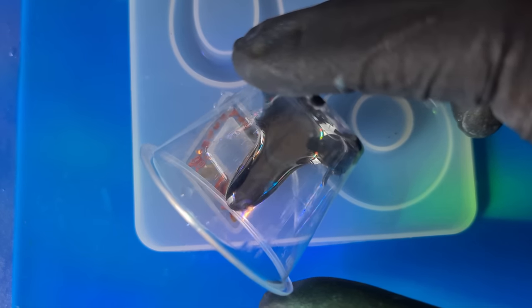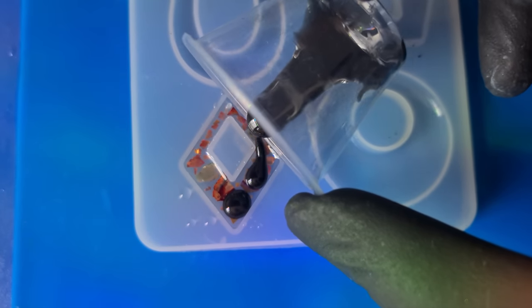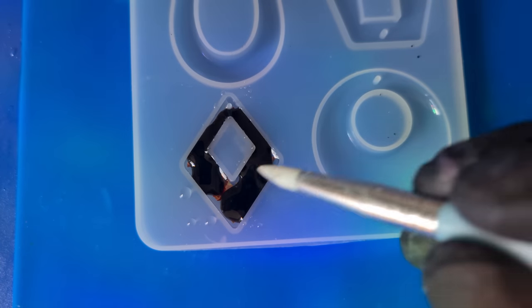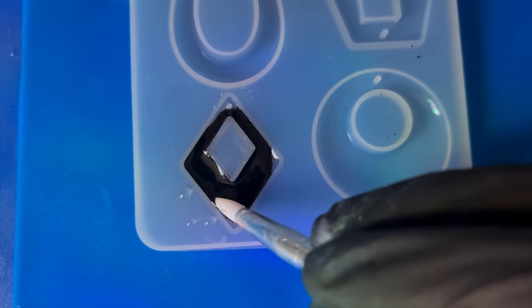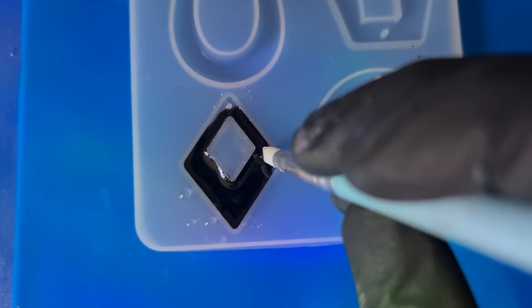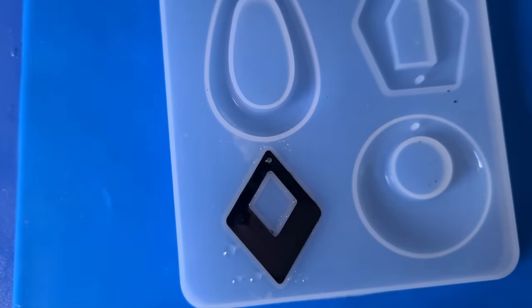And then just pour that over evenly. You can do it in a couple of layers if you like, just so you know it's curing through. And then just using my silicone tool, just taking it all the way to the edges. And I'm going to do this in two layers just to make sure that it's fully cured. So that is my two layers. I'm now going to flip my mold and then just cure the back, which is the front.